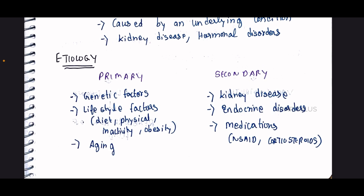Secondary hypertension is caused by kidney diseases — if there is a problem in the kidneys, there will be hypertension. Endocrine disorders can also lead to hypertension. Medications like NSAIDs and corticosteroids — if there are a lot of such drugs, they can contribute to hypertension.